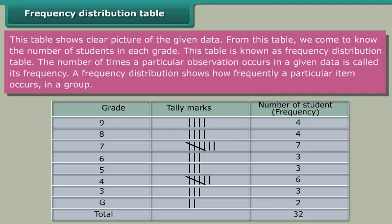The number of times a particular observation occurs in a given data is called its frequency. A frequency distribution shows how frequently a particular item occurs in a group.